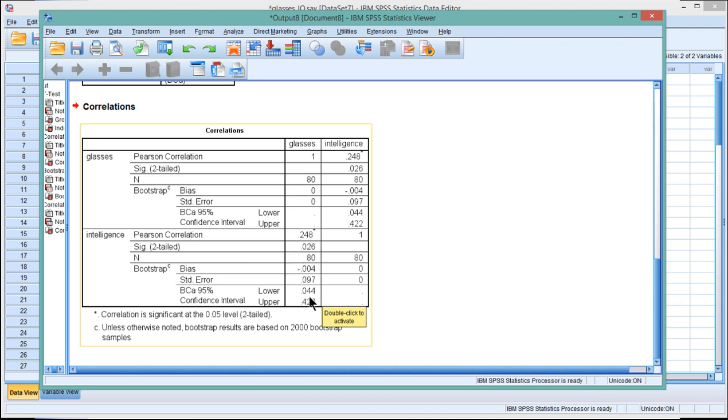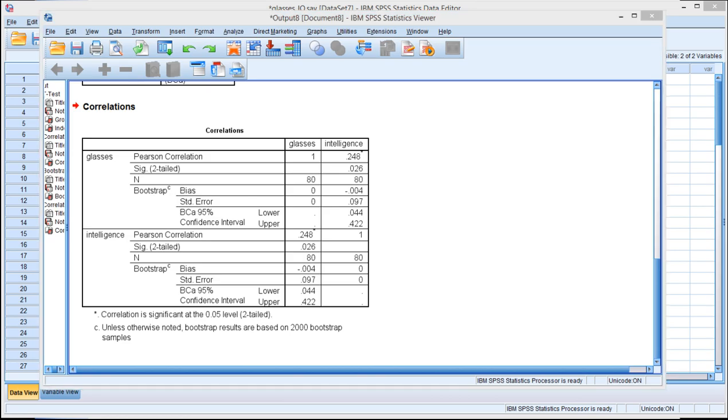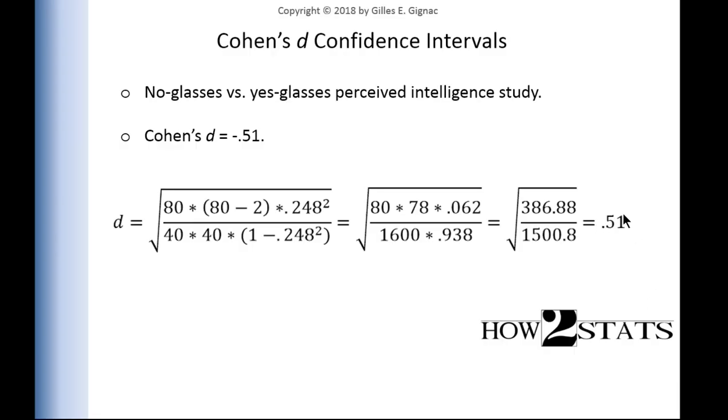Now these are 95% confidence intervals for the point estimate of 0.248. And now I want to calculate the lower and upper bound confidence intervals for the point estimate Cohen's d of 0.51. Now the fact that it's negative here and positive here is irrelevant. It's arbitrary whether we're dealing with negative or positive Cohen's d's, so long as we know what direction the means are with respect to our interpretation.